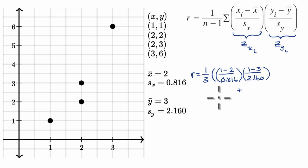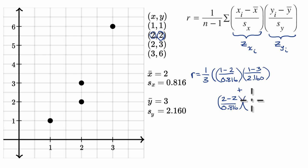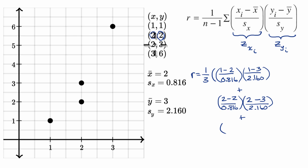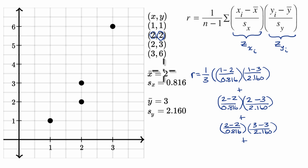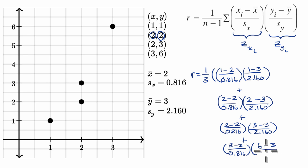The next pair: two minus two over 0.816 — that's where I got the two from, subtracting the sample mean — times two minus three over 2.160. Plus two minus two over 0.816, times three minus three over 2.160. And then the last pair: three minus two over 0.816, times six minus three over 2.160.